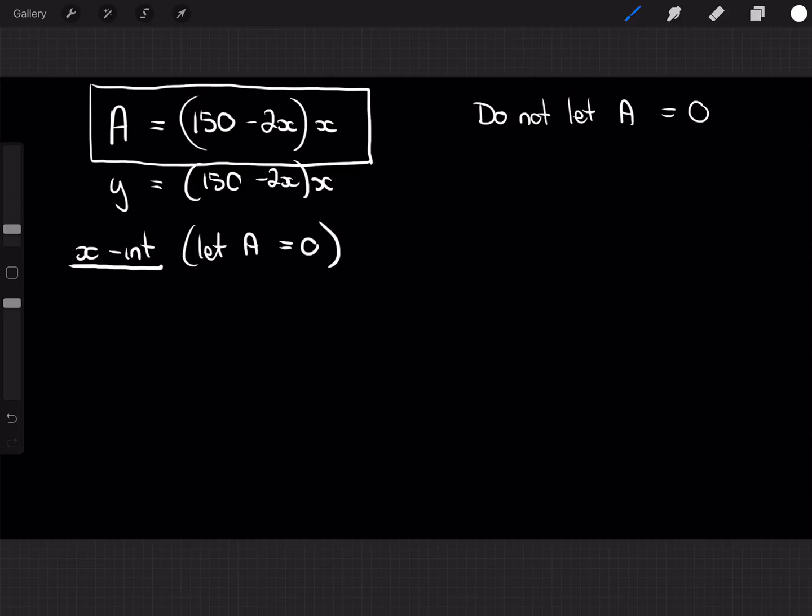So, and using, of course, the null factor law, then either x equals 0, or there's our first intercept, or 150 minus 2x equals 0. And if that's the case, then that implies that 150 equals 2x. Therefore, x must equal 150 divided by 2, which is 75.